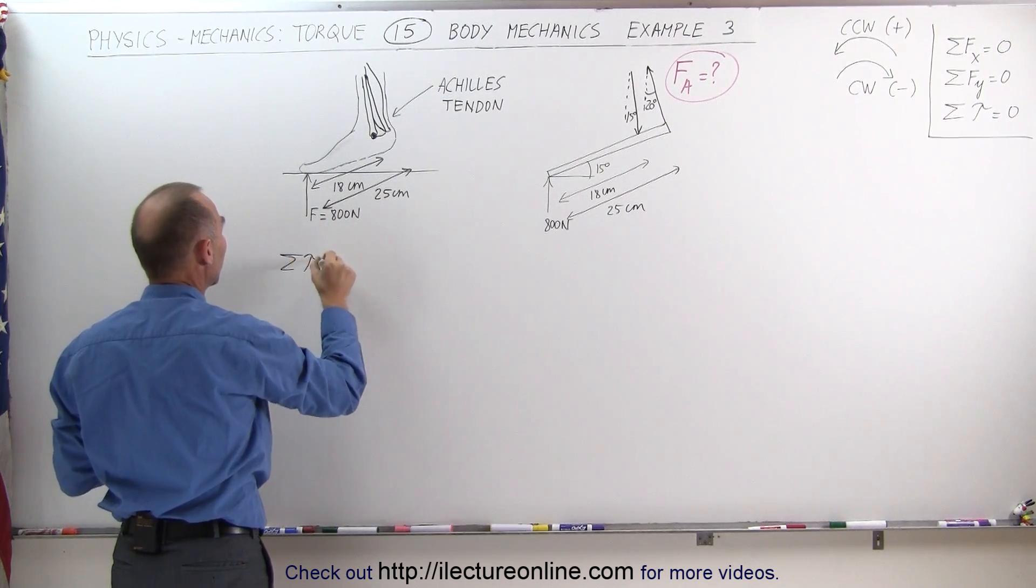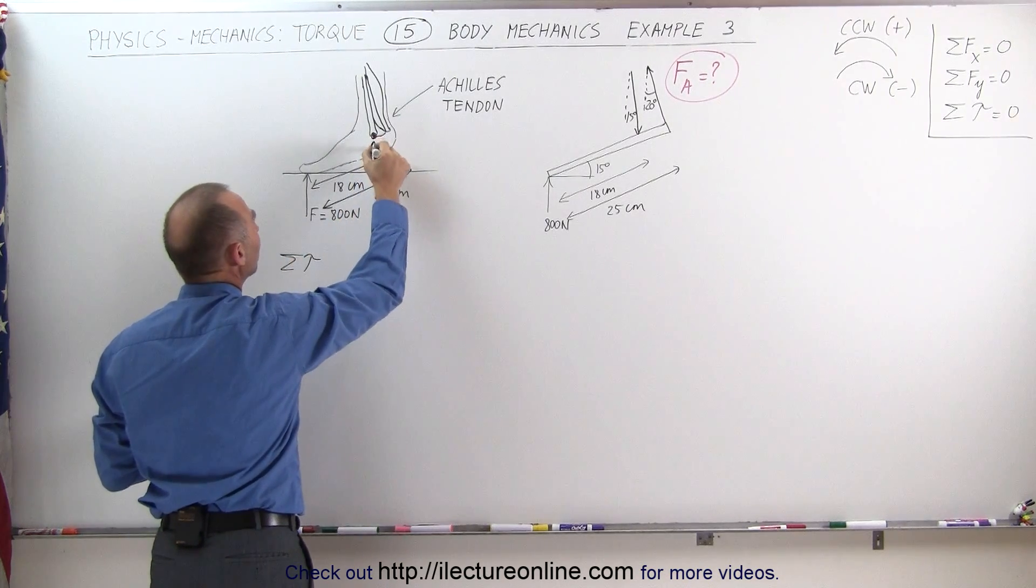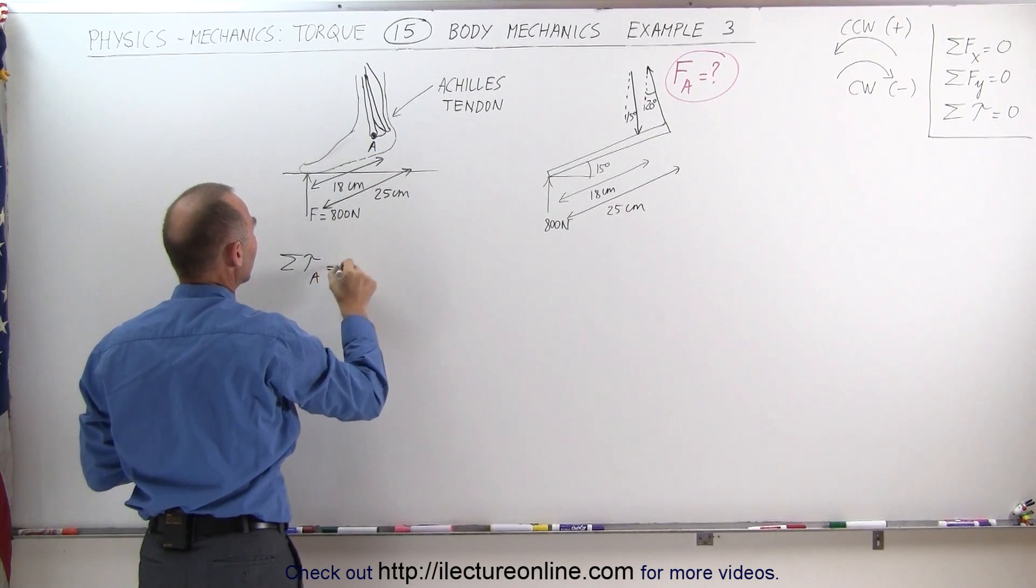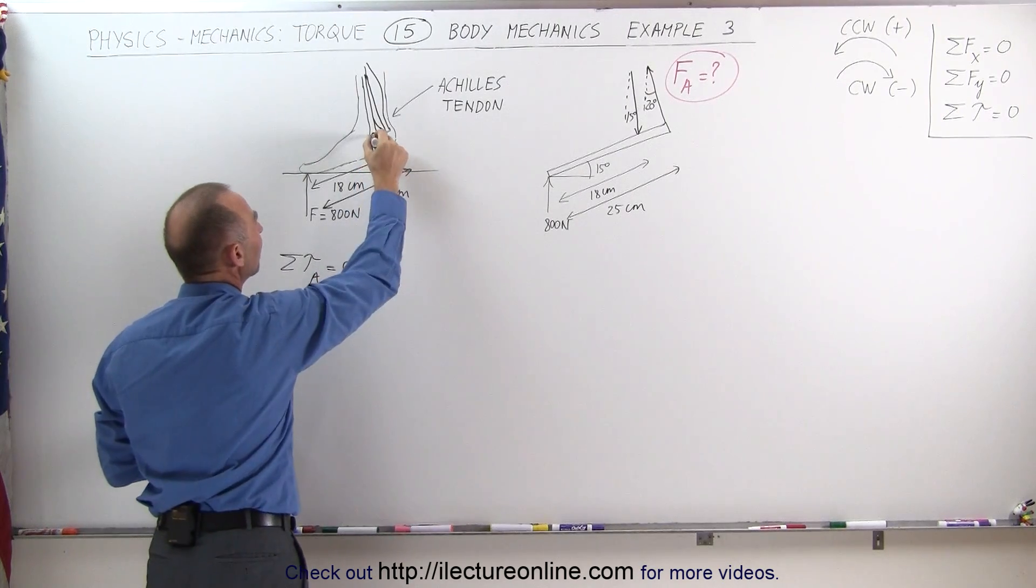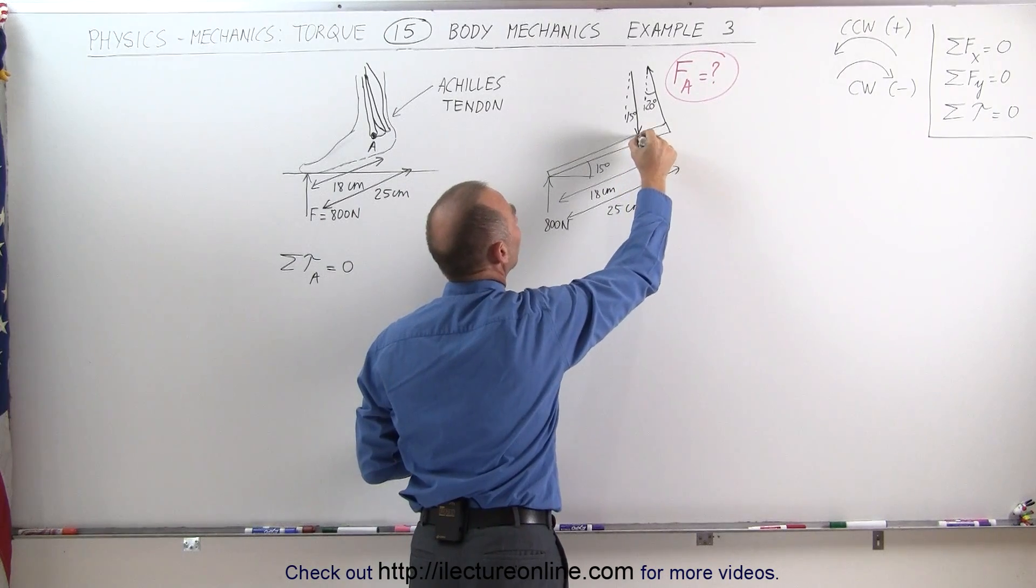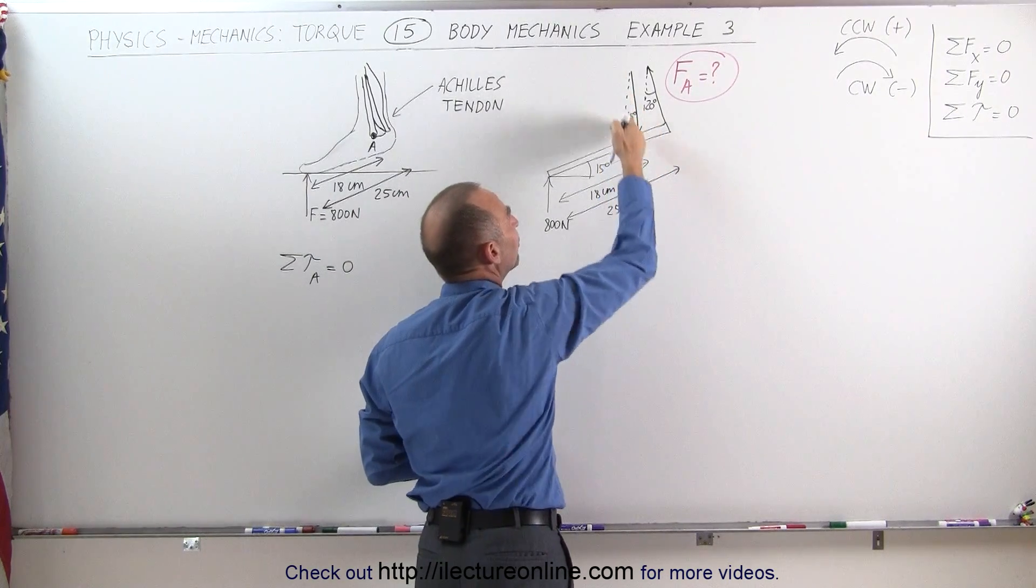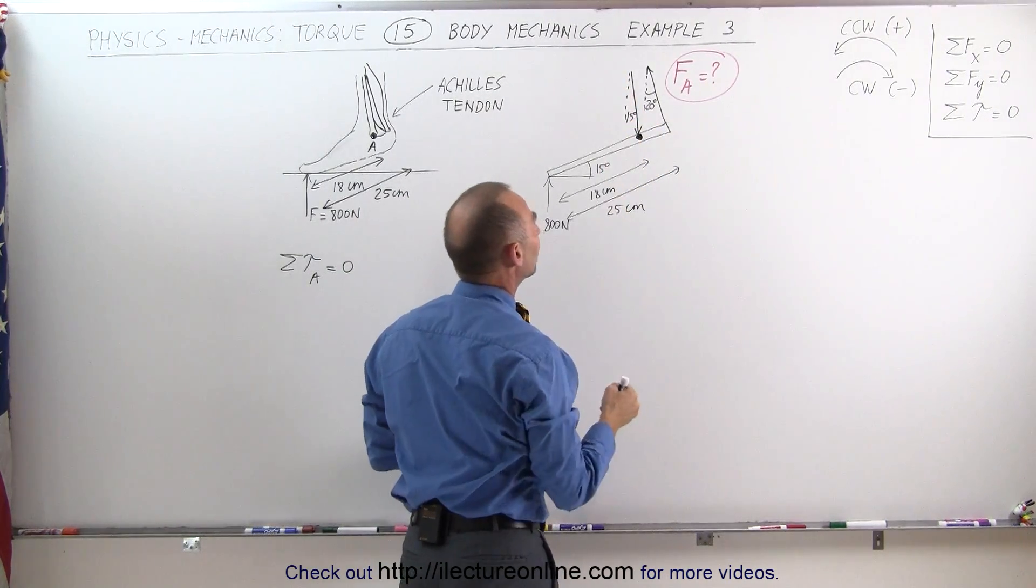We know that when things are in equilibrium, the sum of all the torques about the point, let's call this point A, about point A must add up to zero. If we take our pivot point right there, we do not have to worry about the force of the bones pushing down against the foot.